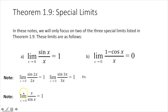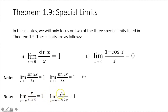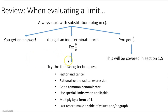Similarly, the limit as x approaches 0 of x over sine x equals 1, and the limit as x approaches 0 of 2x over sine of 2x equals 1. Whether it's this way or the reciprocal, as long as the expressions match and it's the limit as x approaches 0, it equals 1. Now we talked about this last time, but let's review.